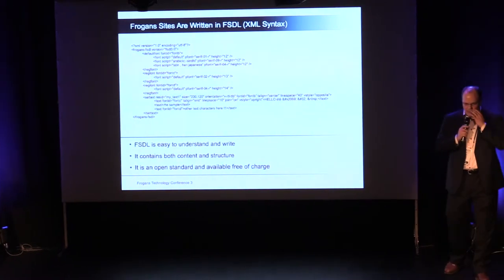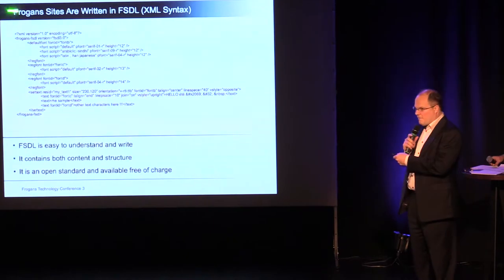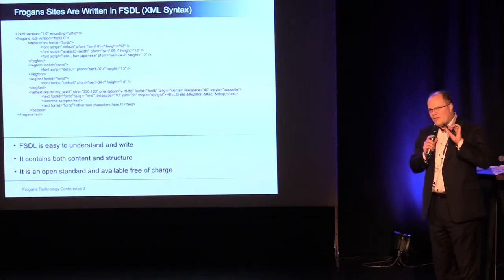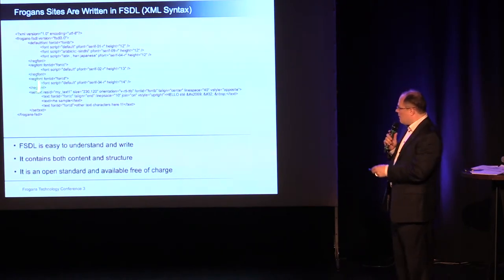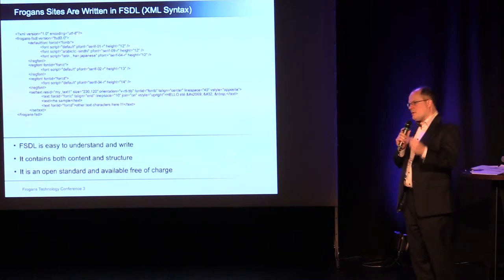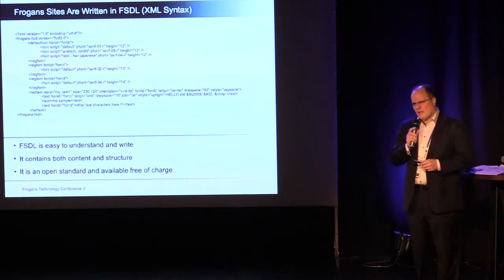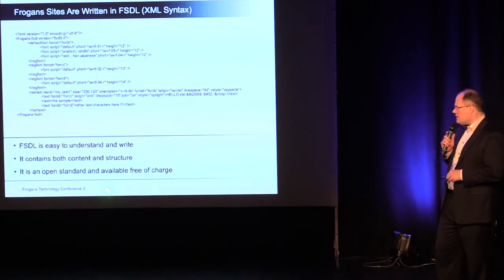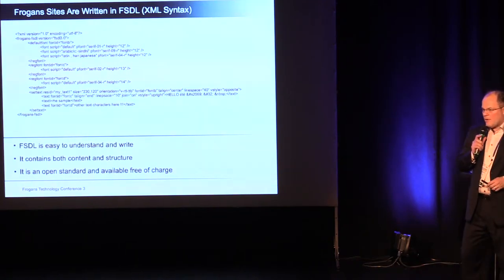One thing that one has to understand when it comes to foreground sites is that the sites are written in a language, and that language is called FSGL. I only have a few technical items and acronyms in this presentation. This one is important because it's the language in which the sites are described. For those who are familiar with XML, this is an example of an XML piece of code. It's very easy to read, very easy to understand, and it describes everything in a foreground site — the content of the site and also the structure of the site. So basically, if you're familiar with XML, you are already familiar with FSGL. As always with OP3FT, this is an open standard and is downloadable from OP3FT free of charge.